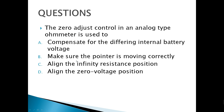The zero adjust control in an analog type ohmmeter is used to compensate for the differing internal battery voltage, since the main problem with an ohmmeter is battery aging.